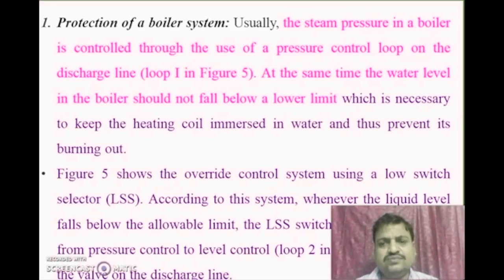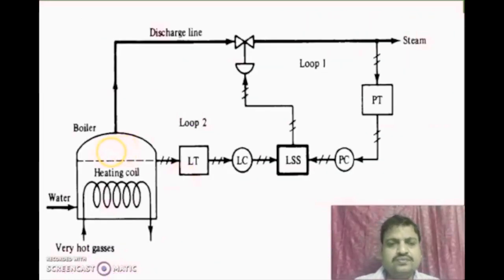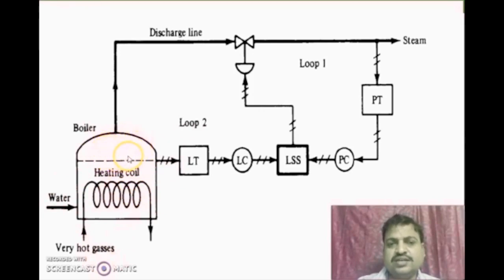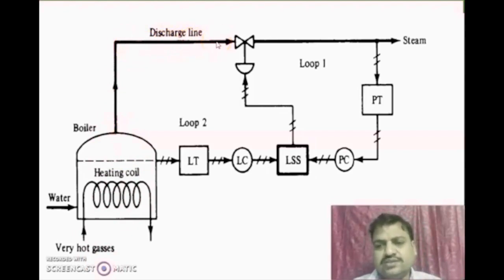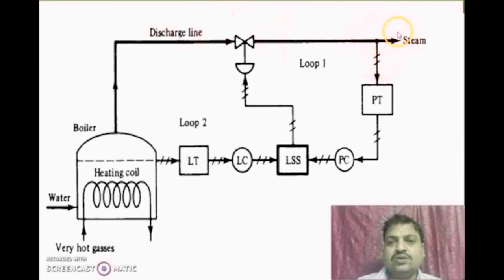To understand the principle involved in this Selective Control System, we will take an example — the simple boiler system. In the process industry, for various heating purposes, we use a boiler. Here, we send some water and, with the help of hot gases, generate steam. This steam is sent into the discharge line, from where it can be used for various heating purposes. Our controlling objective is pressure control of the steam — we want to maintain constant pressure or constant flow of the steam.